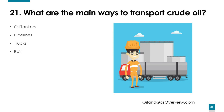What are the main ways to transport crude oil? The four main ways to transport crude oil are using oil tankers, pipelines, trucks, and rail.